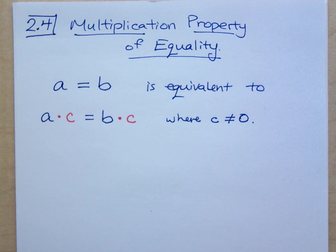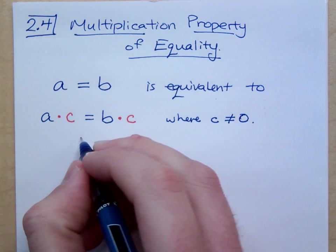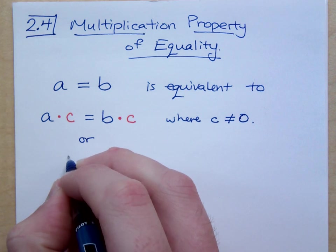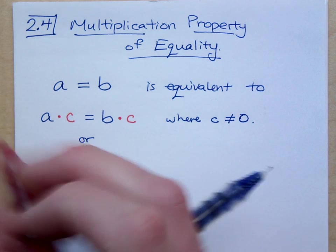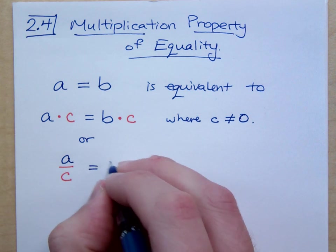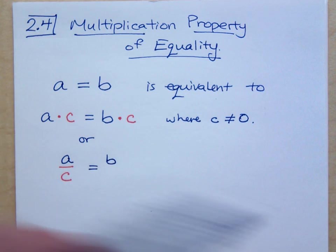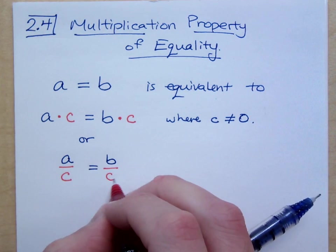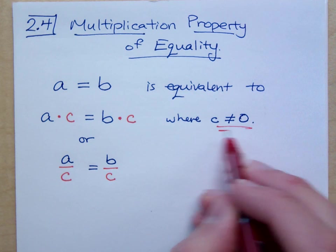As long as what we do to one person we do to the other, what we do to one side of the equation we do to the other, then we're going to be okay. The other way of looking at this is that we could divide both sides by the same number. And we would still maintain the same level of truth here. And again, C does not equal 0.